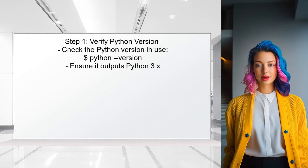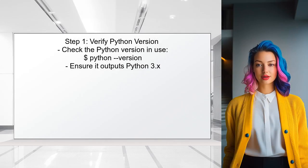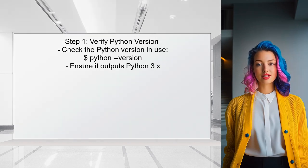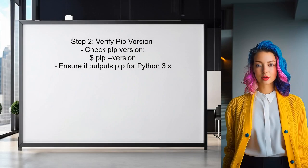To resolve the issue with the GI package, the user should first ensure they are using the correct version of Python. Since the error indicates a Python 2 syntax issue, it's important to check the Python version being used. Next, the user should confirm that the pip command is associated with Python 3. This can be done by checking the pip version and ensuring it corresponds to Python 3.